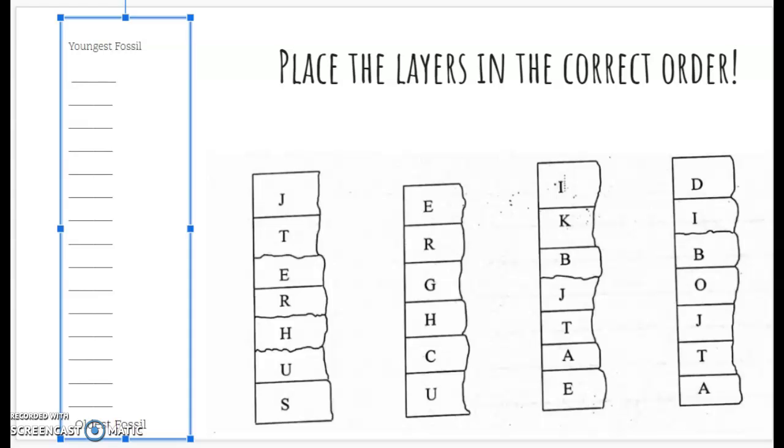I'm going to be showing you how to put the layers in the correct order. You can see we have four different columns here and each column has different letters in it. Those letters are representing different index fossils, and instead of doing pictures of animals that might be harder to identify, we tried to make it as clear as possible and use letters.